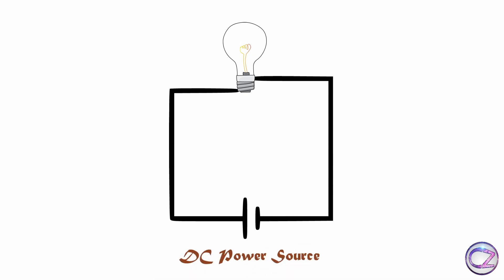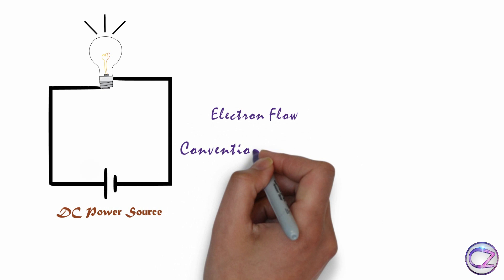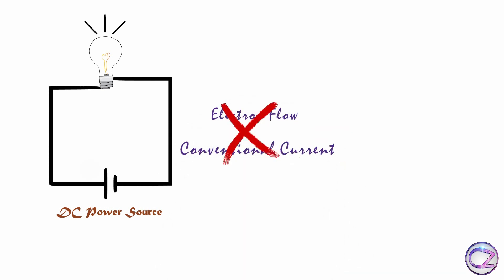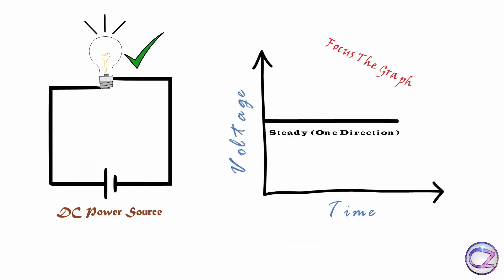Obviously this is DC power source. Now focus on this circuit. See electrons are flowing only one direction. Here electron flow or conventional current rule, it doesn't matter. Just see electrons are flowing one direction and lamp glowing.